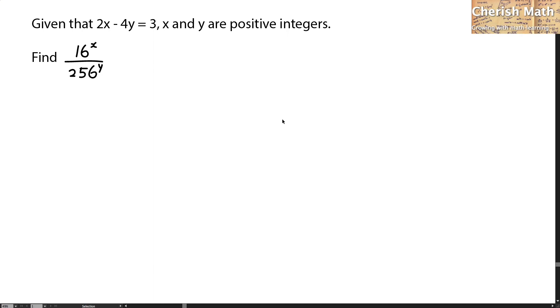Say hi from Chavez Math. This is the question. Given that 2x minus 4y is equal to 3, x and y are positive integers.